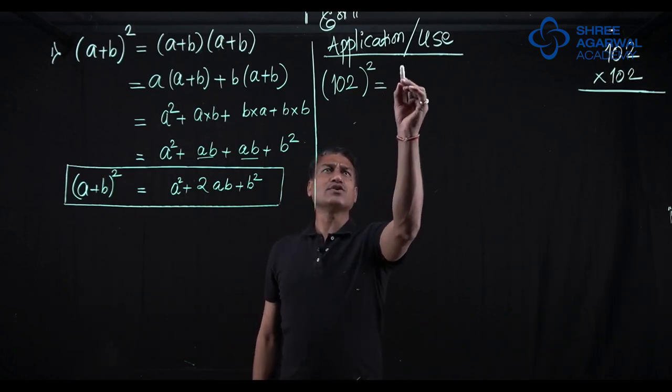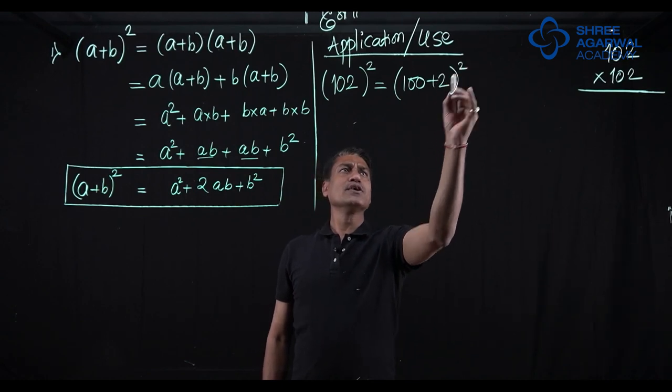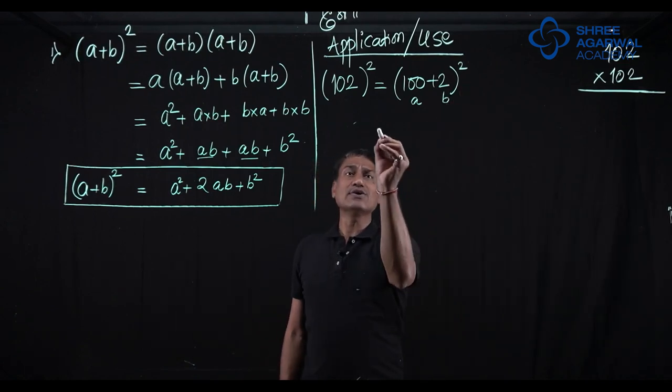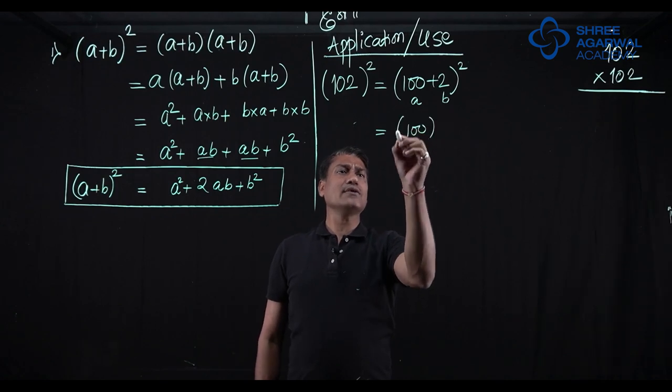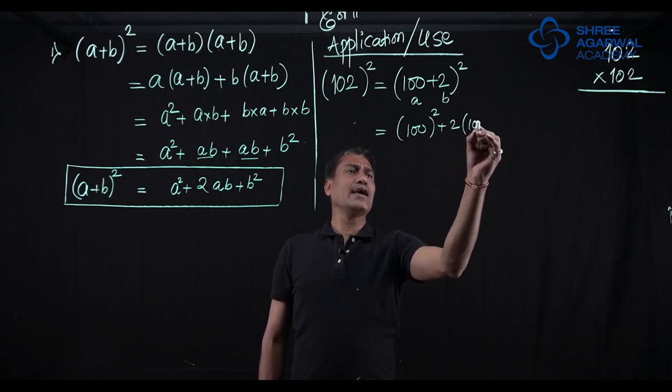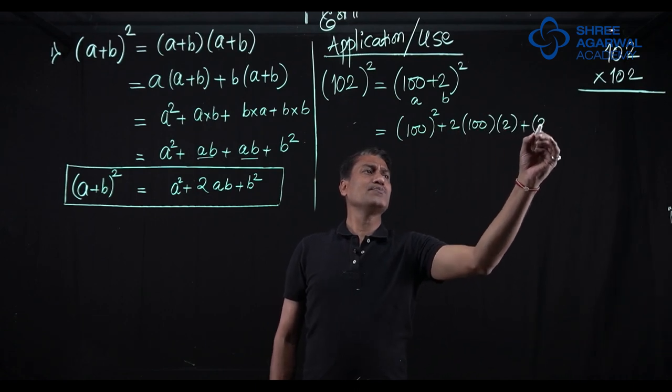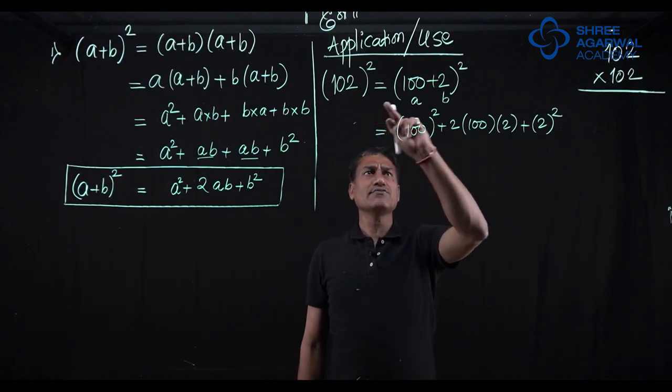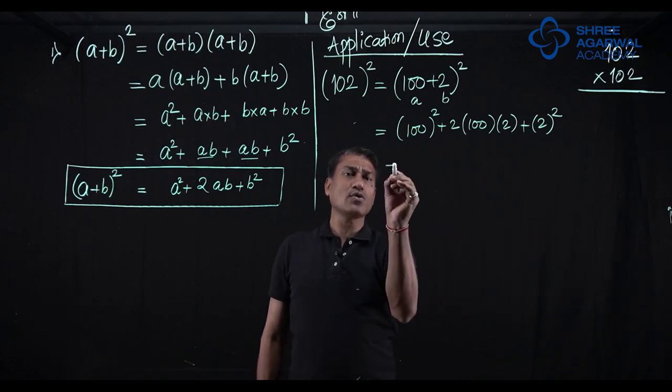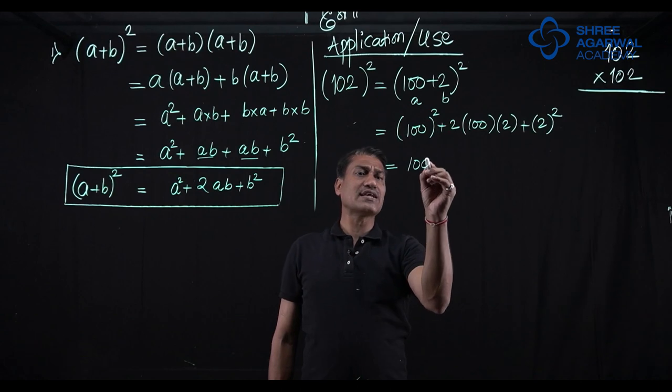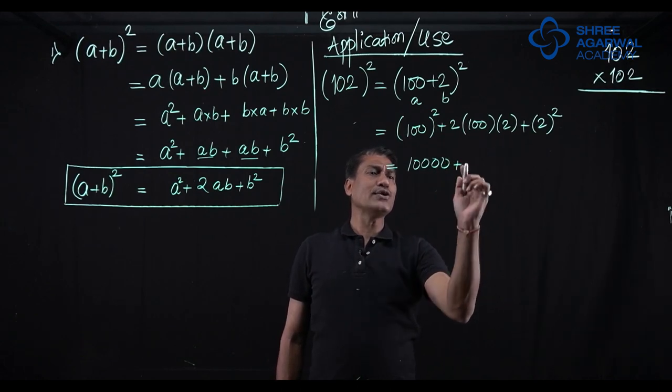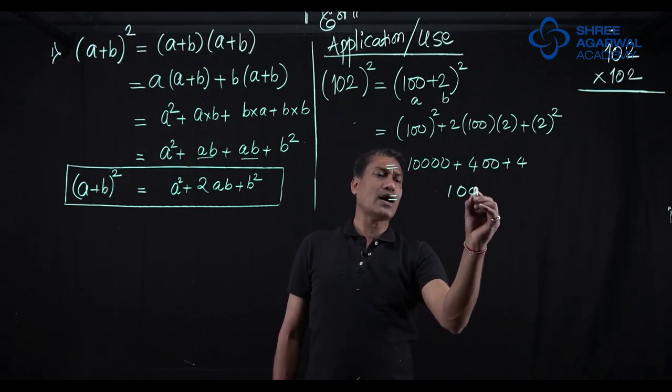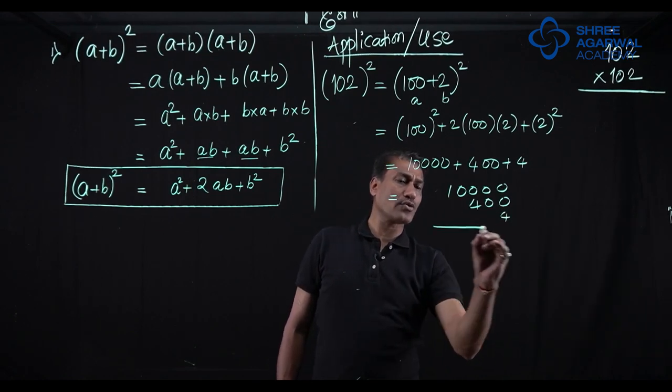I would write this 102 as 100 plus 2. This is our a, this is our b, a plus b bracket square. I would write directly this step, a square plus 2ab plus b square. So wherever there is a, we are going to write 100. Wherever there is b, we are going to write 2. So this is now going to be 100 square, 100 square means 10,000, 2 times 2 are 4, 4 into 100 is 400 and 2 square is 4. So this comes 10,400 and 4. We have to add them.